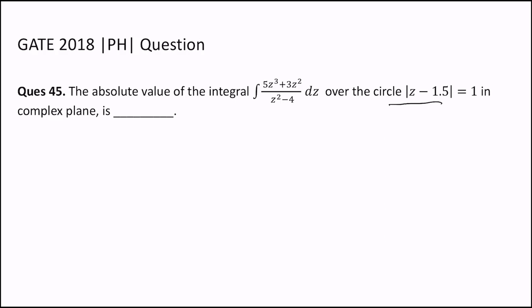Hi, in this video we are going to solve question number 45 of GATE 2018 physics paper. The question is for mathematical physics and it is: the absolute value of the integral of (5z³ + 3z²)/(z² - 4) dz over the circle |z - 1.5| = 1 in the complex plane is...